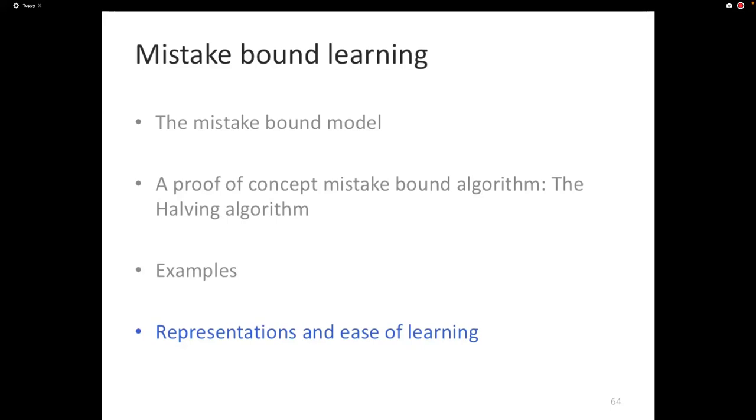The interesting part here is if you have a concept class where you can show that the number of mistakes that even the halving algorithm makes is exponential in the dimensionality, then that concept class is unlearnable. Because no other algorithm can do better. Question: For mistake-driven learning, I remember when we make mistakes we do some update. Could we also do some update if we want? The definition of the mistake-driven algorithms is you make an update but only if there's a mistake. You can, it's just it won't be a mistake-driven algorithm. The mistake-driven algorithm says the number of mistakes equals the number of updates.